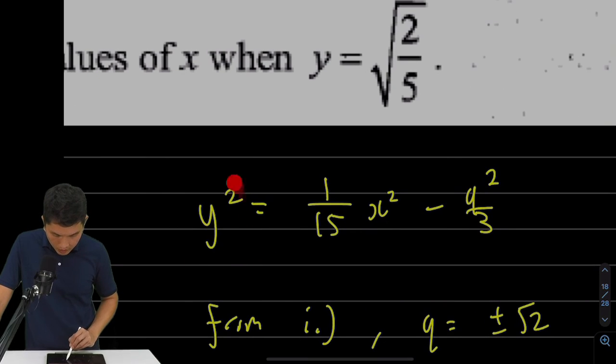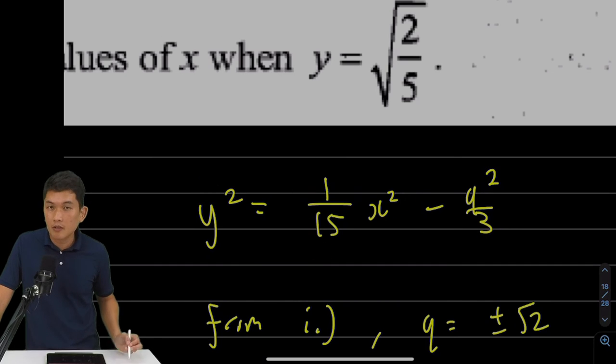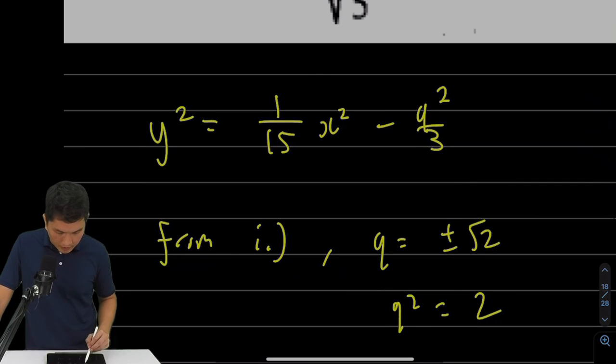So carrying on from earlier on, y-square equals to 1 over 15 x-square minus q-square over 3. But from part 1, I already worked out what is q. q is plus minus root 2, which means q-square is 2. If q-square is 2, then this is just minus 2 thirds.